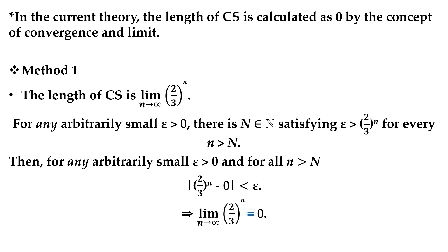Method 1 is as follows. The length of the Cantor set is limit of (2/3)^n. For any arbitrary small epsilon larger than 0, there is capital N satisfying epsilon larger than (2/3)^n for every n larger than capital N. Then, for any arbitrary small epsilon larger than 0 and for all n larger than N, absolute value of (2/3)^n minus 0 is smaller than epsilon. Thus, limit (2/3)^n equals 0. This again is based on the flawed proof that if absolute value of x minus x prime is smaller than epsilon, then x equals x prime.